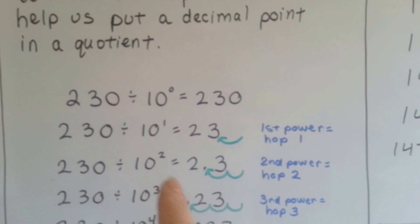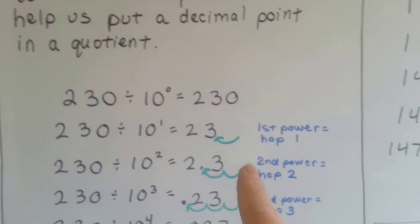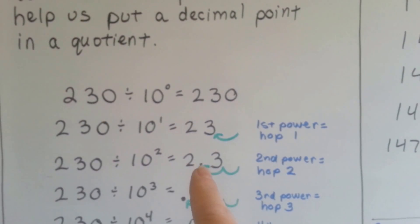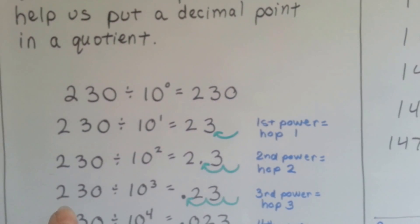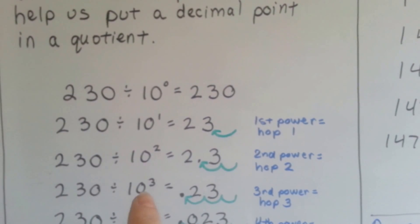230 divided by 10 to the second power means it's going to hop two times from behind where the 0 was to behind the 3 and now in between the 2 and the 3. Same thing with 10 to the third power.